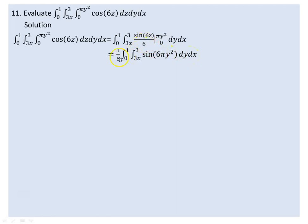The integrand has 6pi y squared here. Now we need to reverse the order of integration. We reverse the order of integration by identifying the region.